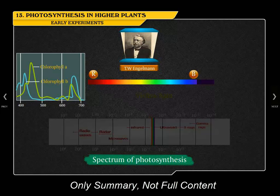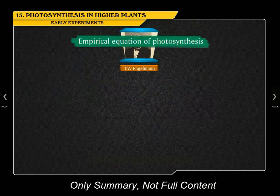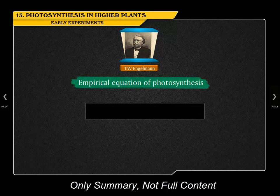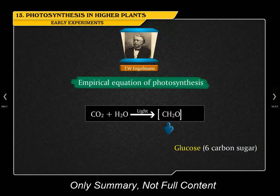In the middle of the 19th century, the empirical equation for the process of photosynthesis was given: CO2 plus H2O in the presence of light forms CH2O (glucose, a 6-carbon sugar) plus oxygen.